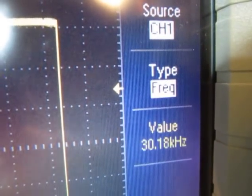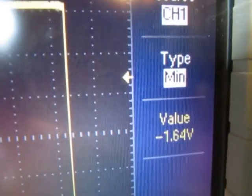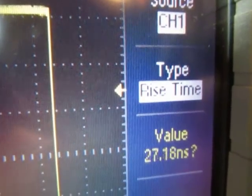You can see the measurement type here says none. Let's push this until we get through: frequency, period, mean, peak to peak, cycle RMS, min, max, rise time. So there's our rise time measurement. Look at the measurement - it's got a question mark next to it.